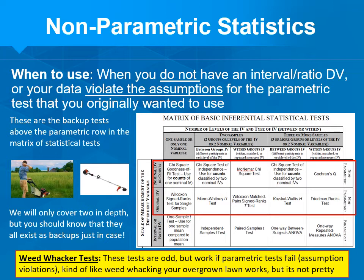They're kind of like weed-whacker tests — odd, but they work even in situations where parametric tests fail. To me, parametric tests are like mowing your lawn: smooth, easy, looks good. But if your lawn is too tall, you can't use the lawnmower, so you've got to weed whack it. Non-parametric tests are like weed whackers — you can weed whack anything: bushes, tall lawns, whatever — but it's not pretty.